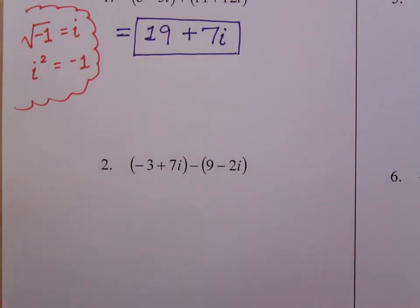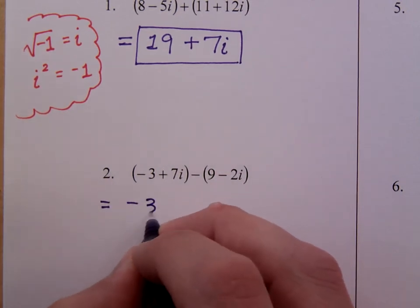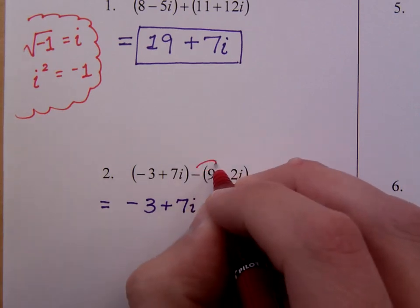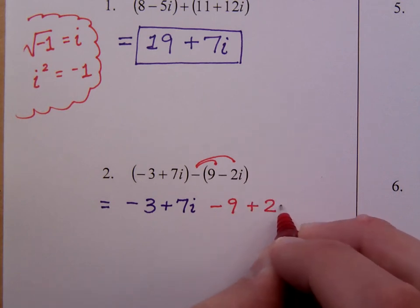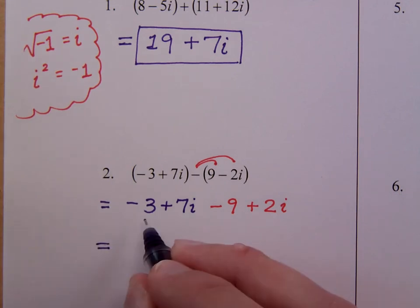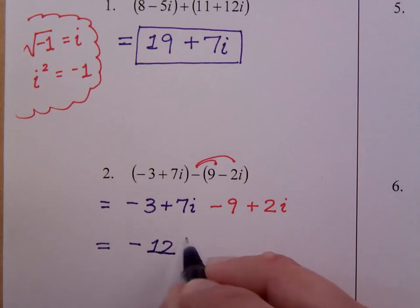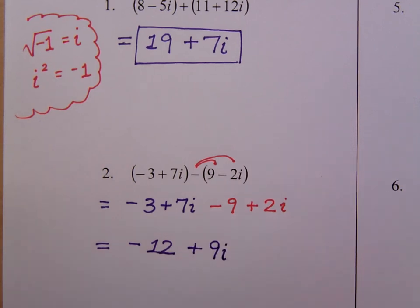Likewise here in number 2. Number 2 has subtraction, so if it helps you, you can rewrite this and say this is negative 3 plus 7i. Distribute that negative, so it becomes minus 9 plus 2i. That's just a matter of combining like terms. Real part comes first. So negative 3 minus 9 is negative 12. Positive 7i plus 2i is positive 9i. That's all you have to do.